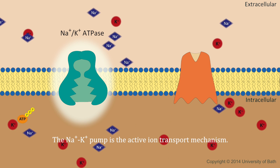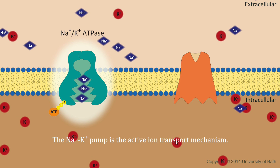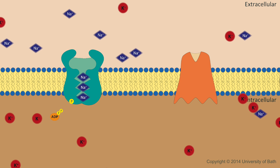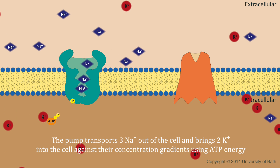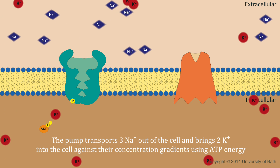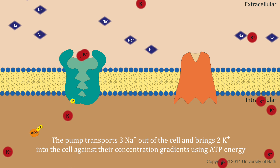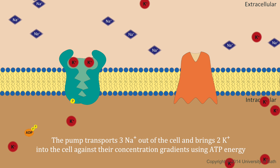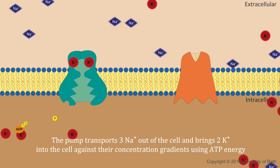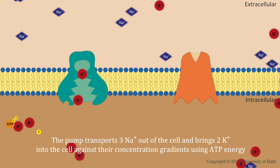The sodium-potassium pump is the active ion transport mechanism. The pump transports 3 sodium out of the cell and brings 2 potassium into the cell against their concentration gradients, using ATP energy.